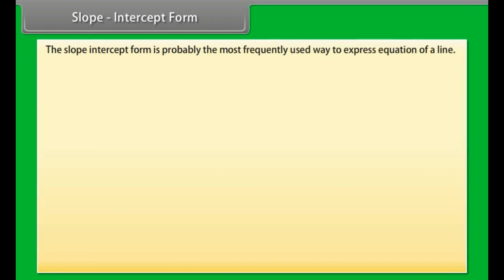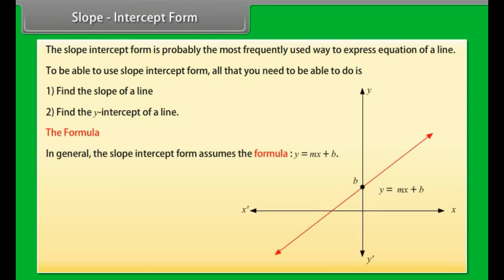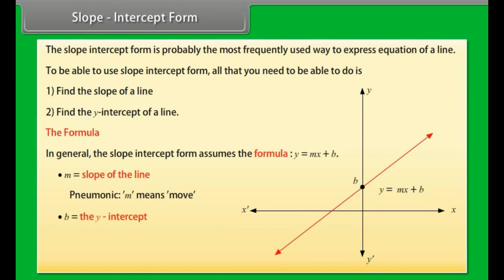Slope-intercept form is probably the most frequently used way to express the equation of a line. To use slope-intercept form, all that you need is to find the slope of a line and find the y-intercept of a line. In general, the slope-intercept form assumes the formula y = mx + b, where m is the slope of the line and b is the y-intercept.